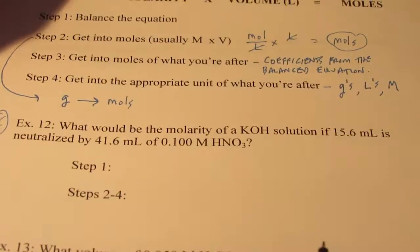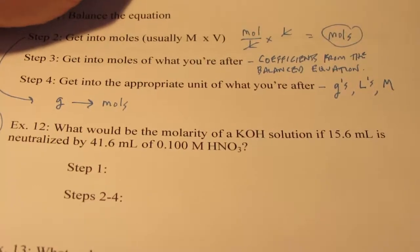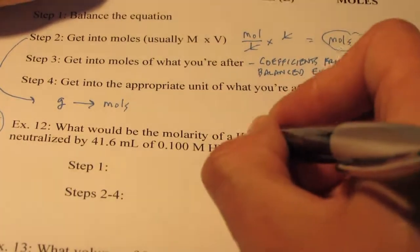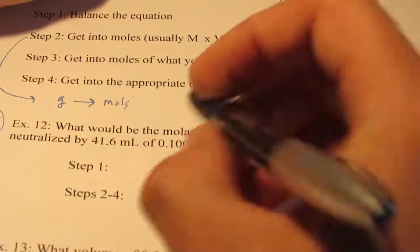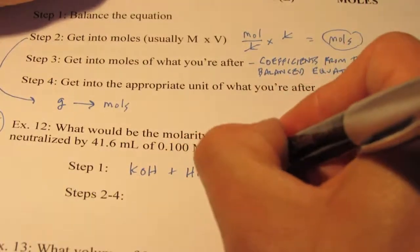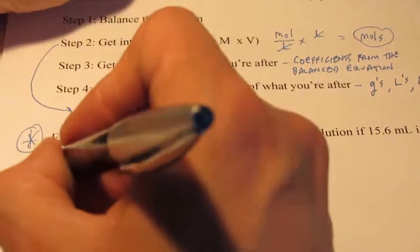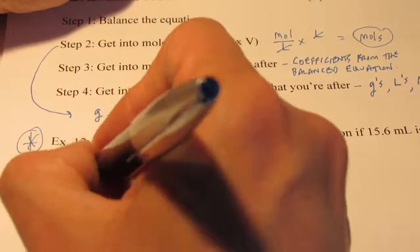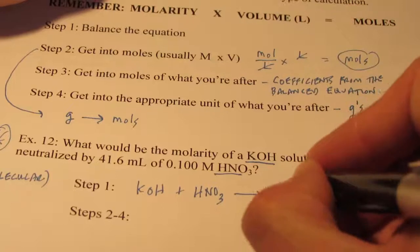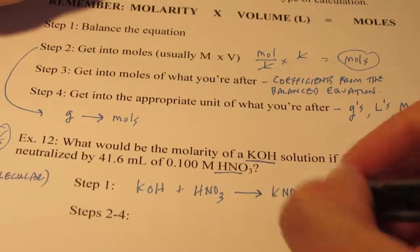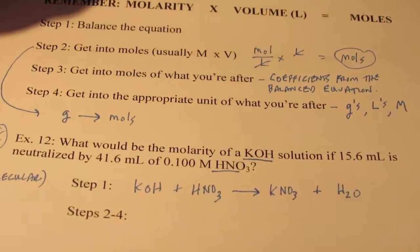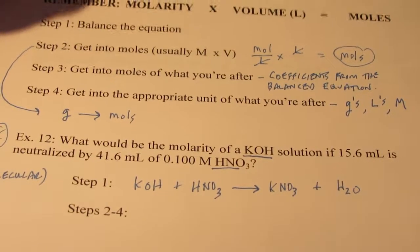Step one is to balance the equation. We have potassium hydroxide and nitric acid. We're going to use the molecular equation here, not ionic or net ionic. These are all double replacement, so K and NO3 get together. Potassium is positive one, nitrate is negative one, so just one of each will do — KNO3. And of course, we make water. It's one to one to one to one. Step one is finished.